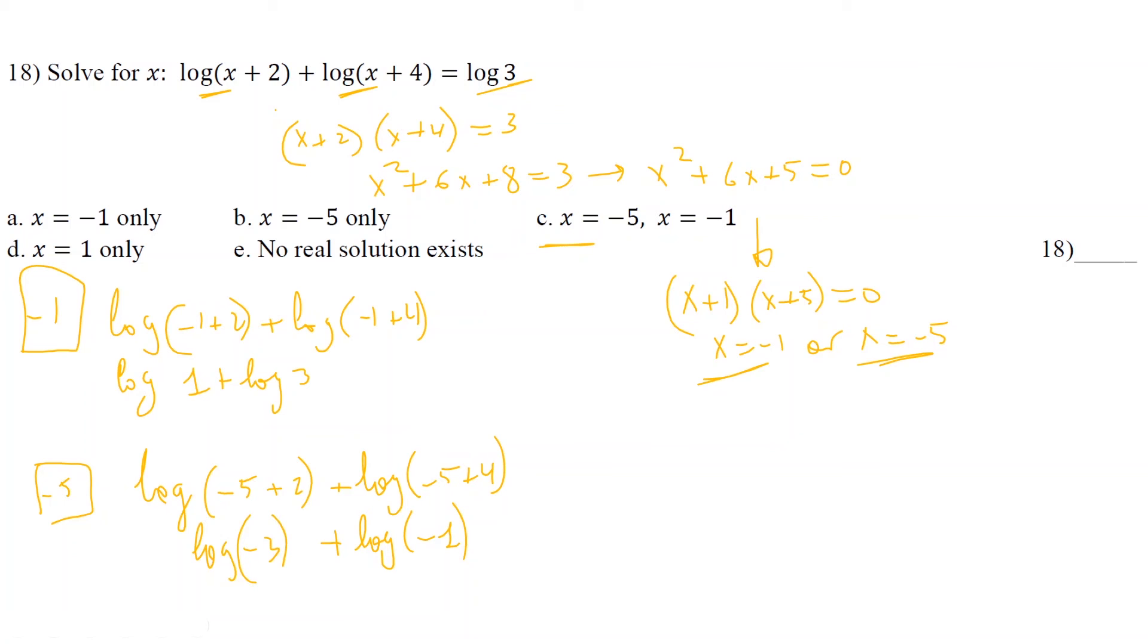Cannot exist. Because stuff inside the logarithms has to be clearly greater than 0. Clearly greater than 0. So we must reject negative 5. We only stay with x equal negative 1. The answer is a.